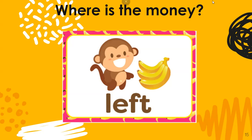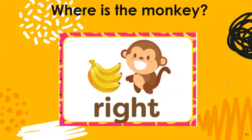Where is the monkey? The monkey is to the left of the bananas. To the left. Where is the monkey? The monkey is to the right of the bananas. Think of which hand you use to write words — do you use your left hand or your right hand? A good way to tell the difference is to hold your two hands in front of you and make an L with both hands. The one that has the L facing the correct way is your left hand, and the other one is your right hand.